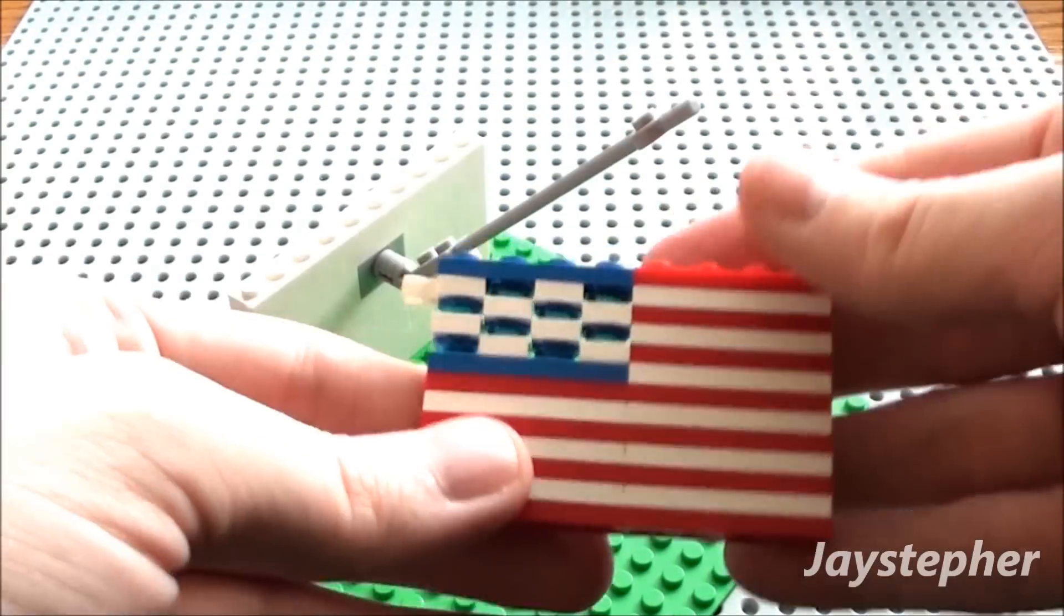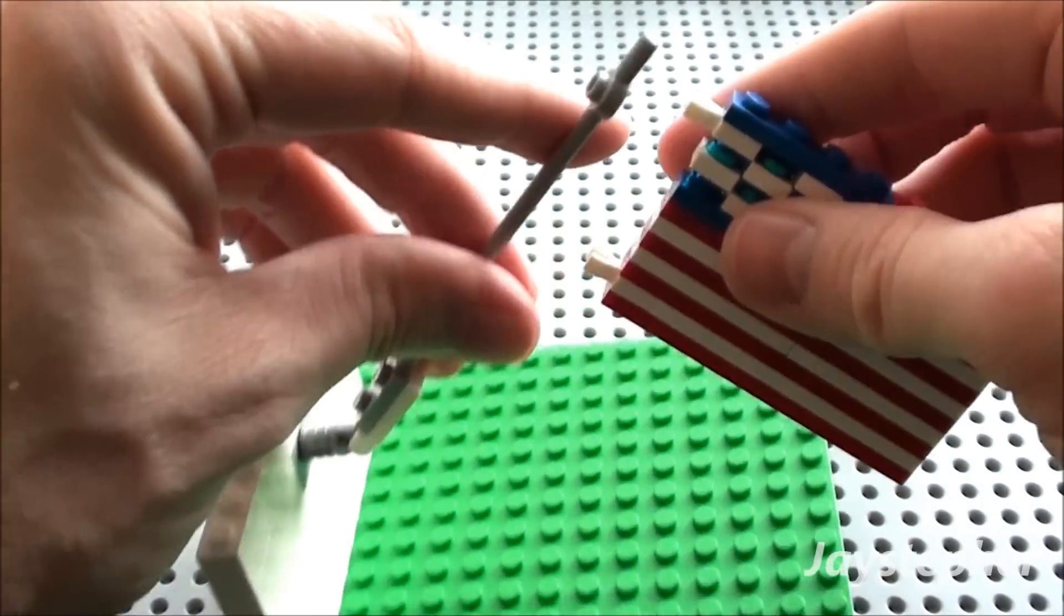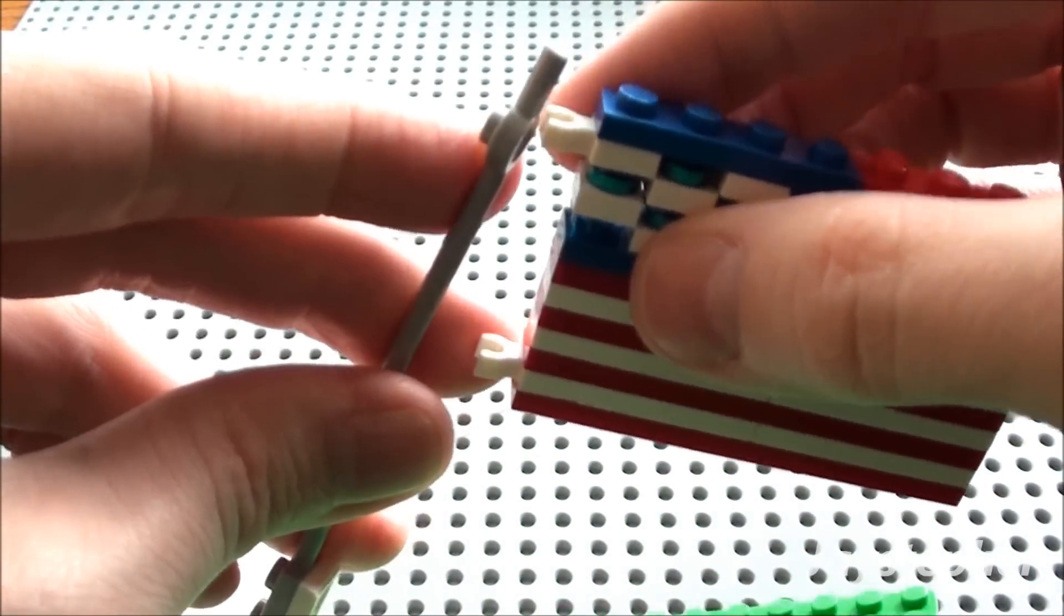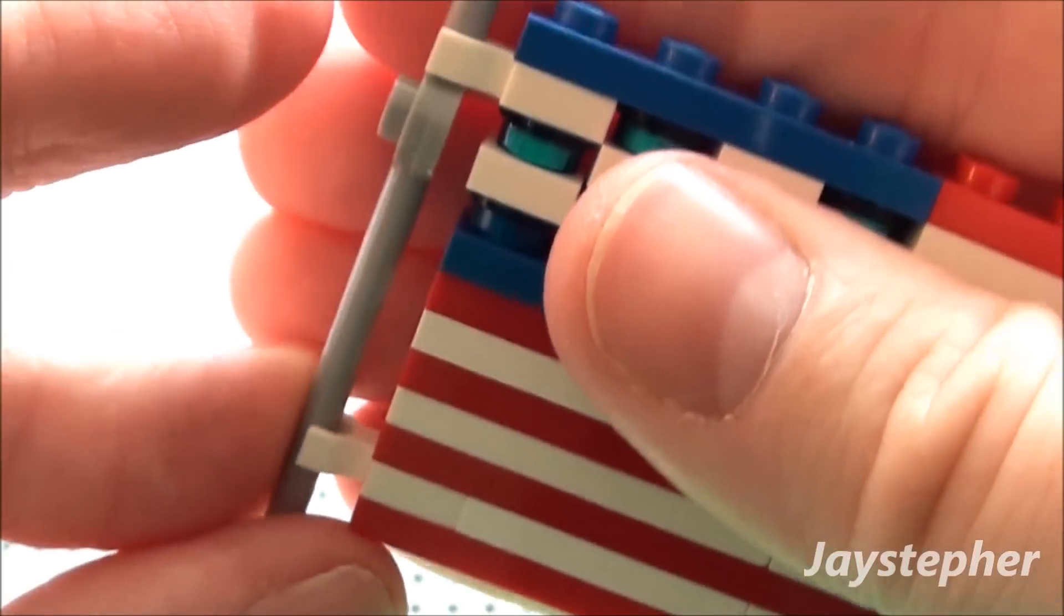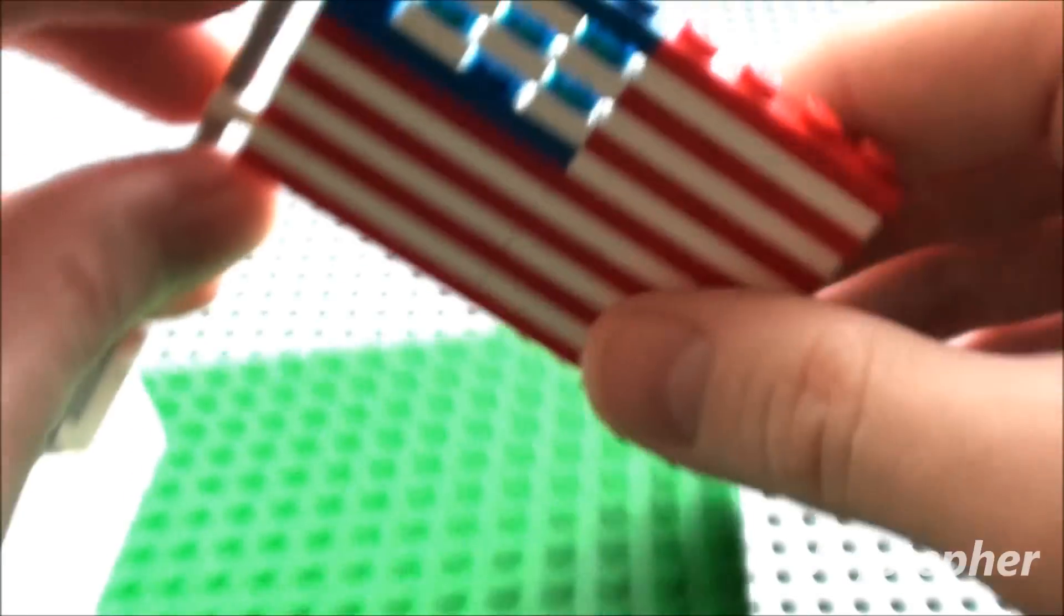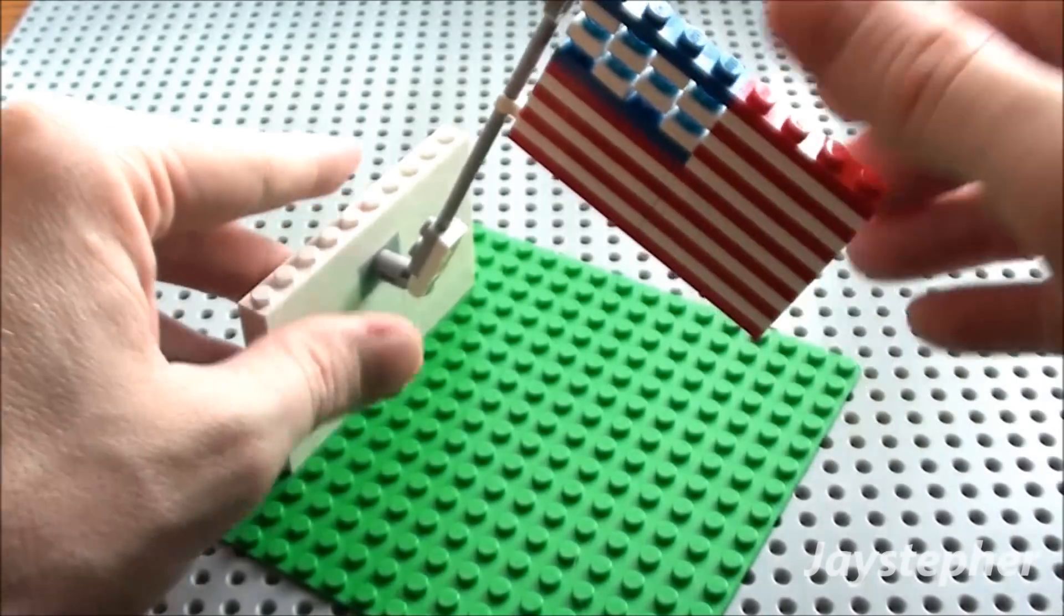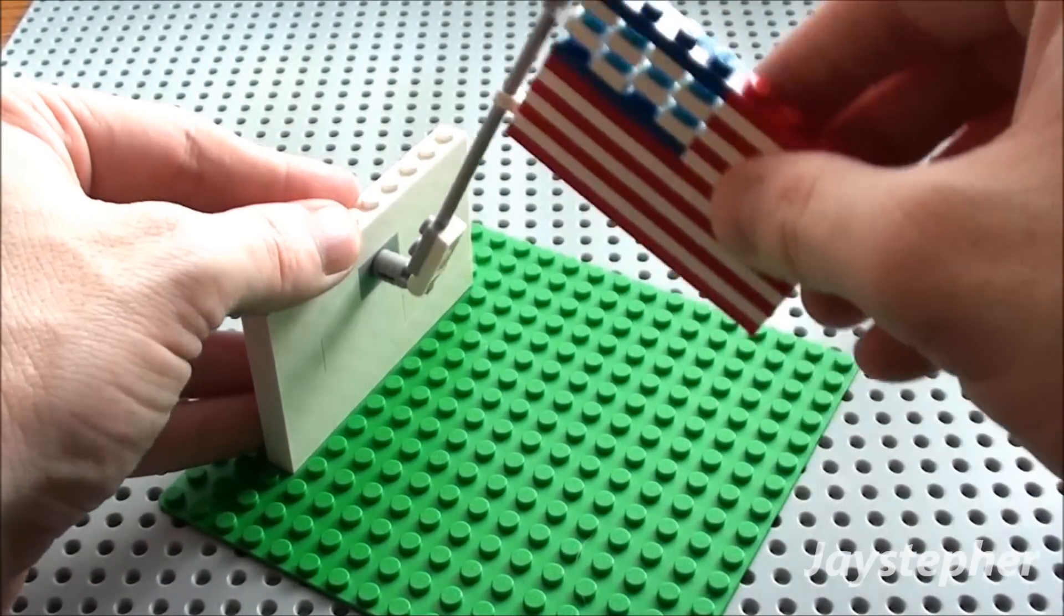So we're ready to attach the flag to the flagpole. Of course that's easy. I'm just simply going to stick the top plate or the top holder here. One down here, just going to keep this thing from sliding down. And there you have it. There's our flag on our flagpole.